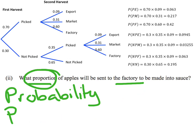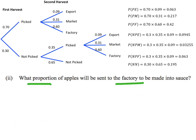Let me just clear the page so we can go back to the actual question. The question said what proportion are going to be made into sauce. So I want to look at all the different combinations that might meet that criteria. I'm going to look at these different combinations here and figure out which ones of them meet the criteria of going to the factory.